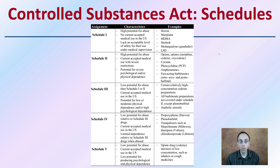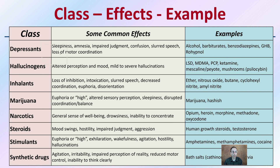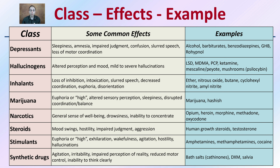There are also some examples provided for what is currently classified in all of these different Schedules. In addition to scheduling, we also have general Classifications, such as Depressants, Hallucinogens, Inhalants, Marijuana, Narcotics, Steroids, Stimulants, and Synthetic Drugs. Some of the effects typically associated with them are listed, and at the very last column, here are some examples. This just shows classifications of different drugs and some of the effects and examples for those drugs.